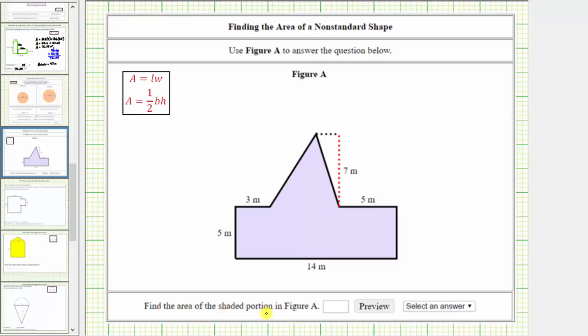We want to find the area of the shaded portion in Figure A, which means we want to find the area of this polygon. We need to recognize there's not a single formula we can use to find this area, but what we can do is break this up into two areas, and then the sum of the two areas will give us the area of the polygon.